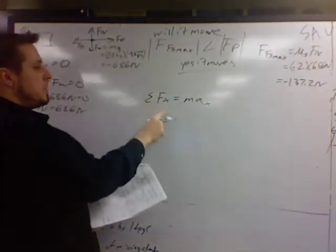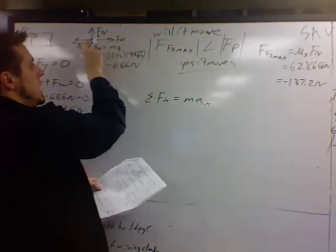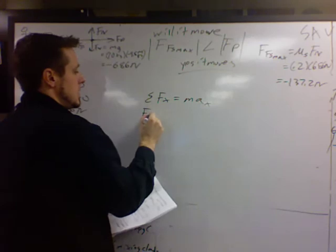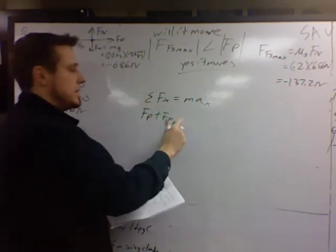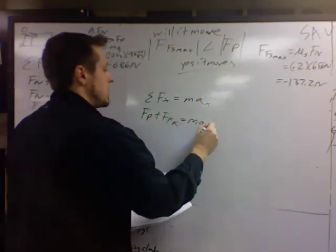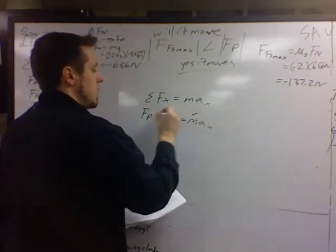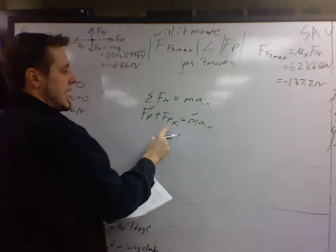Look at your free body diagram for this step. You've got push and friction. That's it. And since it's moving, kinetic friction equals max. We know what m is. We know what push is. We need to get friction kinetic.